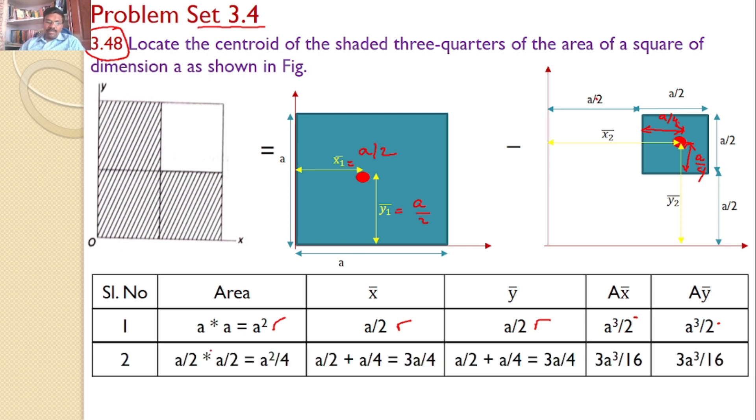A by 2 into A by 2, that is A squared by 4. X bar equals 3A by 4, Y bar also equals 3A by 4. A into X bar: A squared into 3A by 4 is 3A cubed by 16. And this is also 3A cubed by 16.